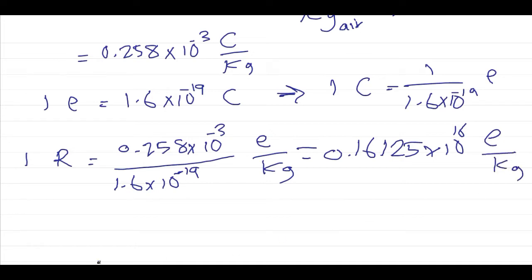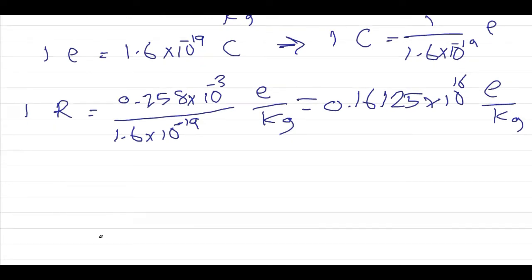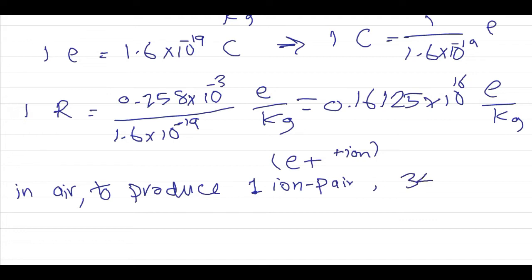Also, we know that in air, to produce one ion pair, which is an electron plus a positive ion, we need about 34 electron volts, which equals 34 times 1.6 times 10 to the minus 19 joules.